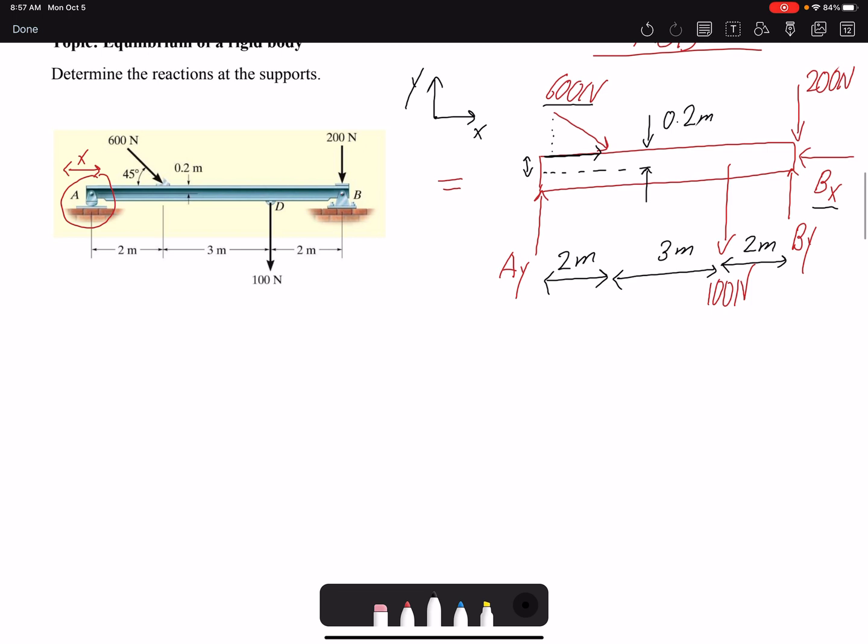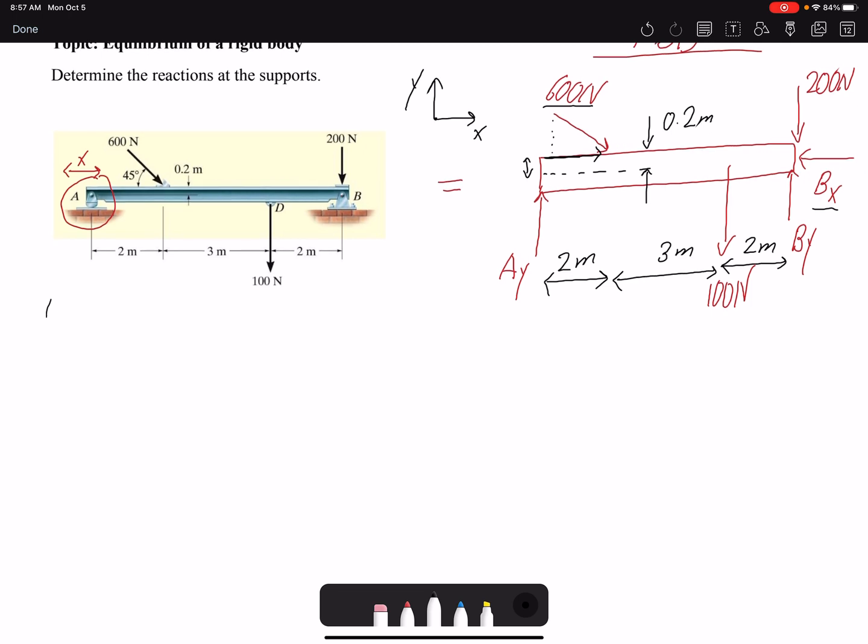Looking at the problem, the unknowns are the reaction forces: Ay (we only had one reaction force at A), Bx, and By. We have three equilibrium equations to solve for the unknowns. We don't want to solve three equations and three unknowns simultaneously, so we look at the problem. If we could only include one unknown in our equation, that makes it easier to solve.